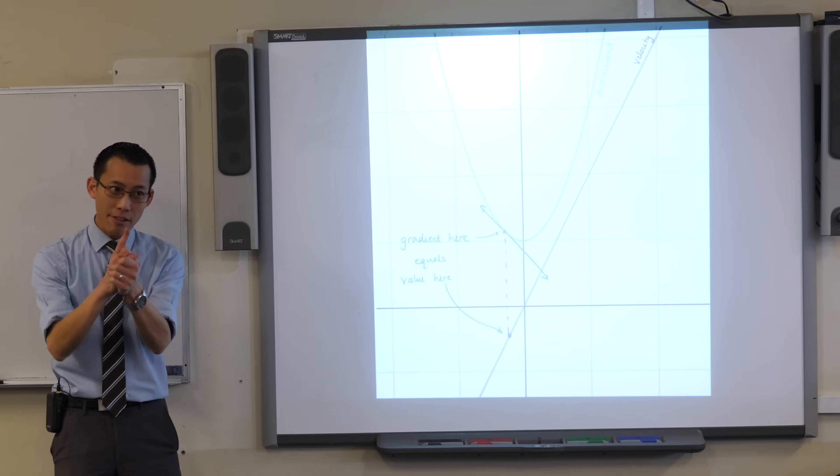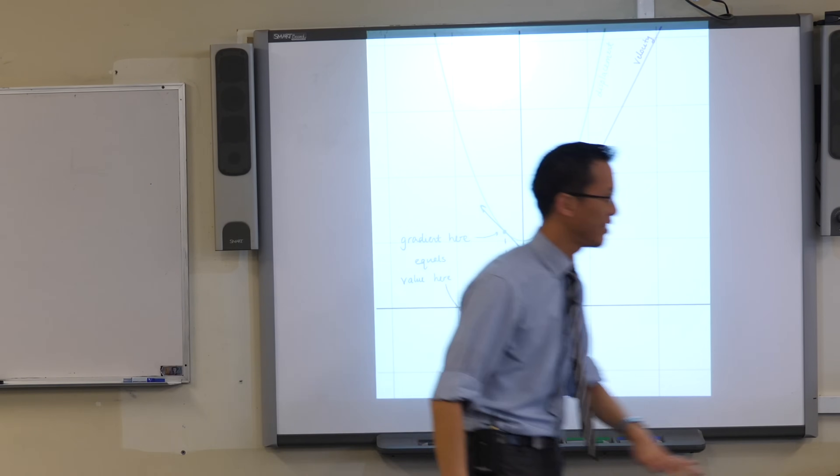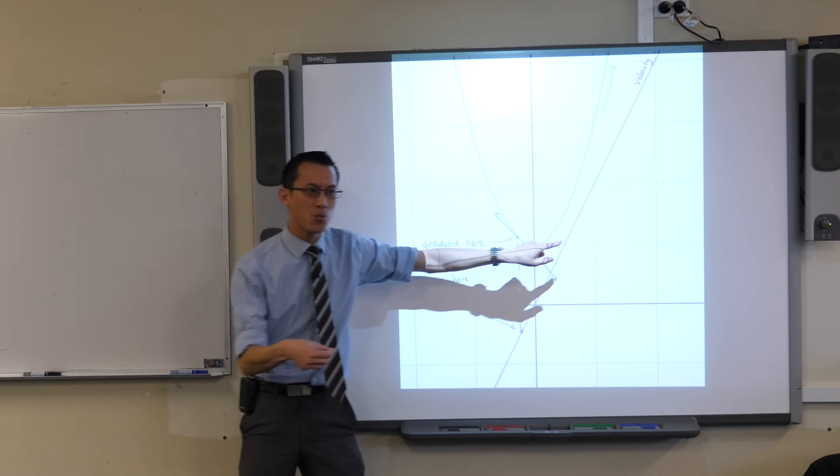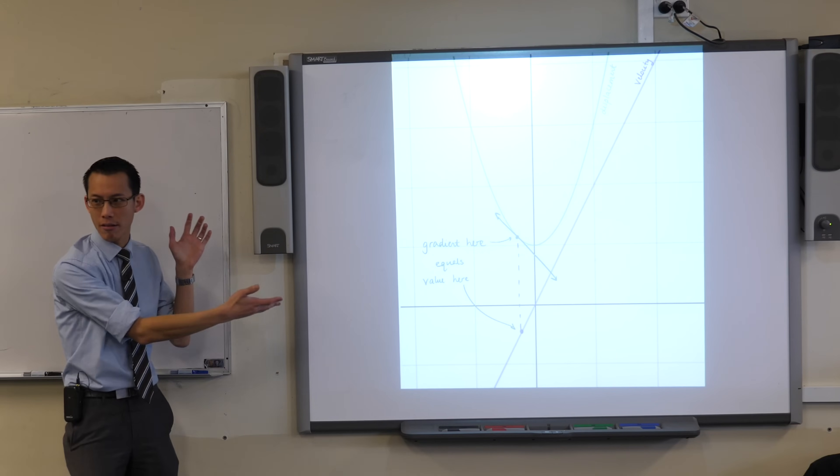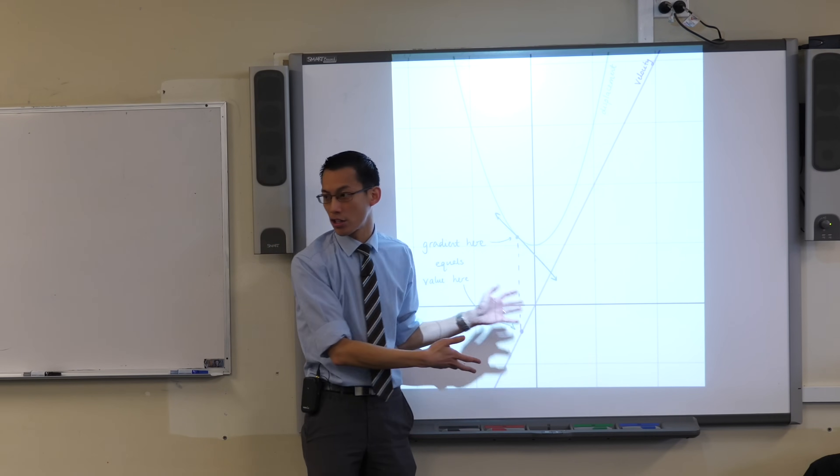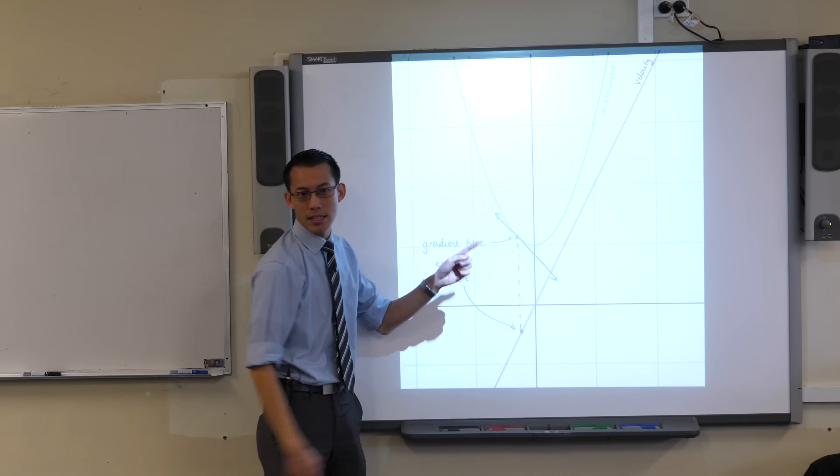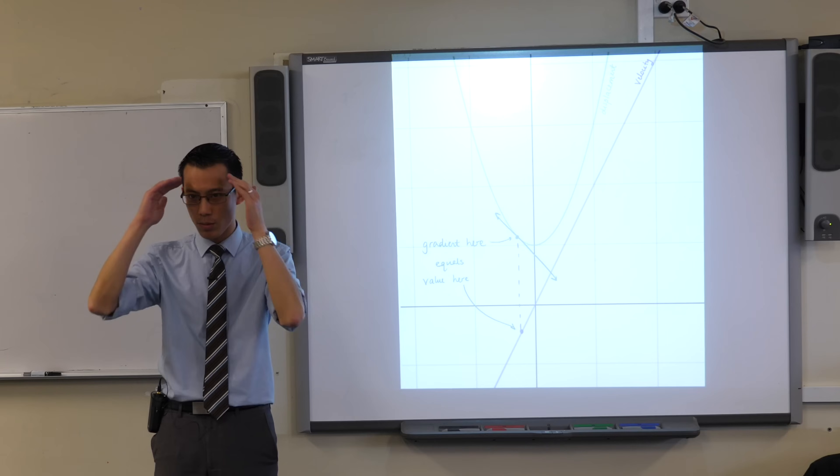Now if we understand then that differentiating from displacement gives us velocity, well therefore it stands to reason that if you integrate instead of differentiate, you should go in the opposite direction, right? Now if I gave you the velocity graph, or the velocity function rather, you should then be able to integrate and get the displacement graph. But just stop for a minute, don't have any pens in your hands, I just want you to think.